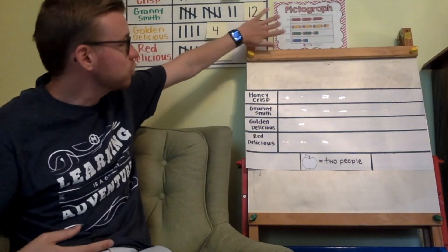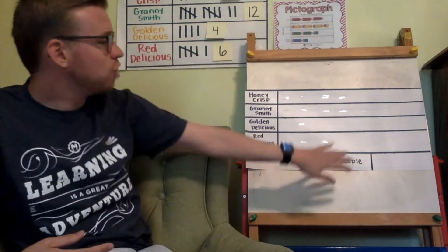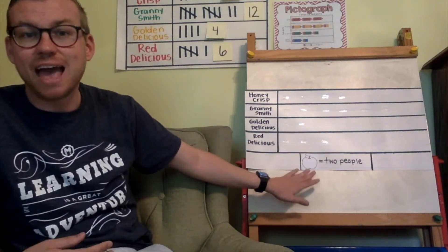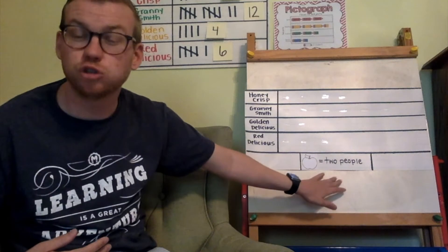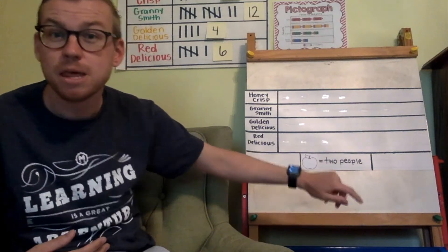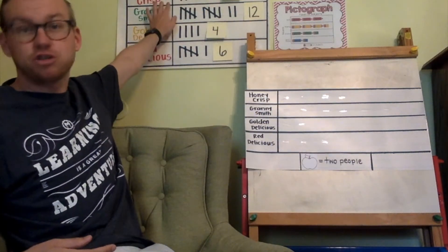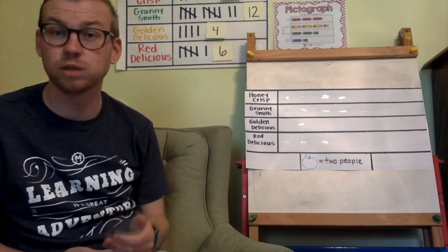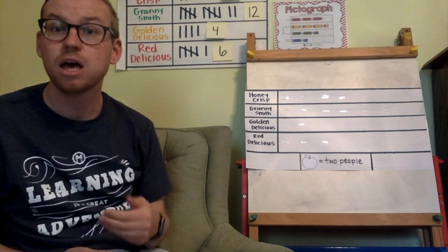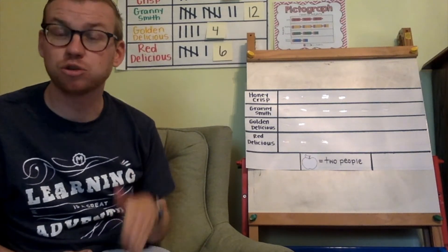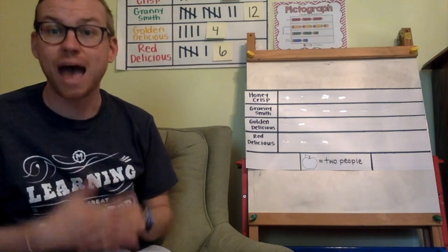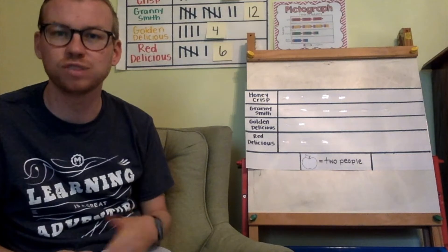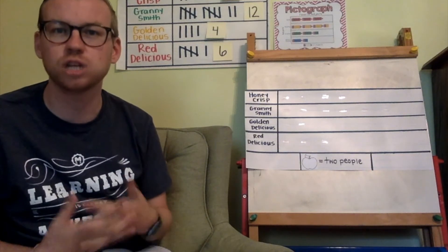A pictograph always has a key. In this case, every apple is going to represent two people. So when I go to put up Honeycrisp, I'm not going to put up eight apples. I'm only going to put up enough so that each apple represents two people — meaning I'll count by twos until I get to eight.